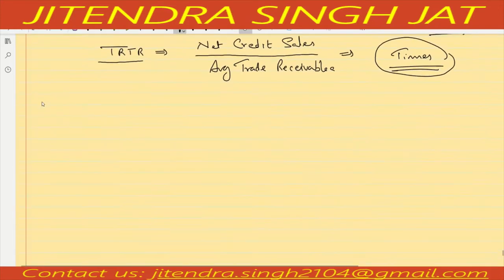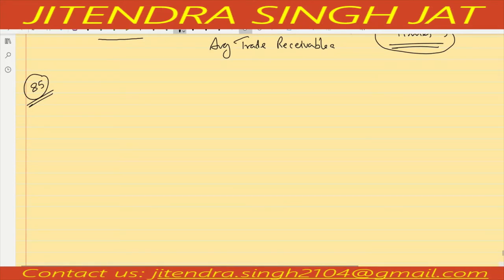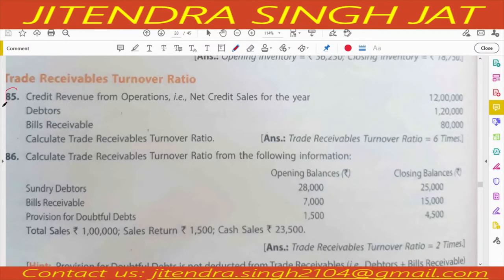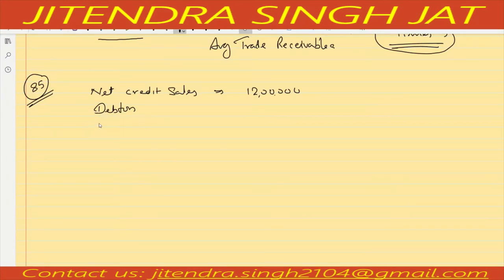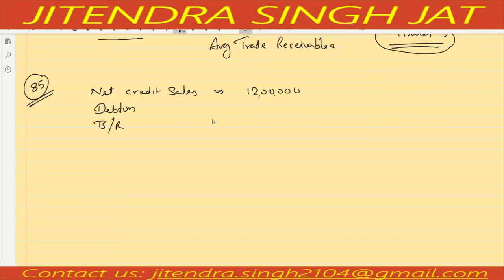Let us begin with numerical question number 85. Credit revenue from operations, that is net credit sales, is given as 12 lakh. Debtors are given as 20,000 and bills receivables are given as 80,000. Opening debtors and opening bills receivable, closing debtors and closing bills receivable — in this manner it is not given; only 1 lakh 20,000 and 80,000 are mentioned.